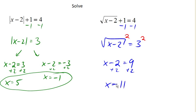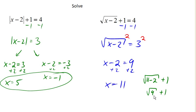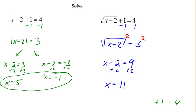Let's do a quick verification. If I plug 11 back into my equation: square root of 11 minus 2, plus 1, is square root of 9, plus 1. Square root of 9 is 3, and 3 plus 1 is indeed 4. So our answer checks. That's the first two — now let's look at the next two problems.